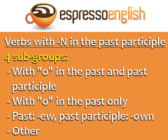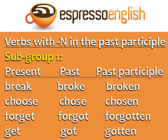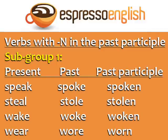These can be divided into four subgroups: with O in the past and past participle, with O in the past only, verbs with the past form ending in EW and the past participle in OWN, and other. Subgroup one: break, broke, broken; choose, chose, chosen; forget, forgot, forgotten; get, got, gotten; speak, spoke, spoken; steal, stole, stolen; wake, woke, woken; wear, wore, worn. In this subgroup, the vowel changes to O in the past and past participle.